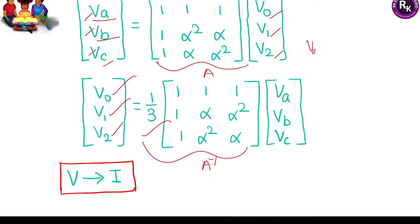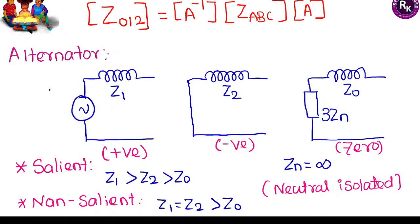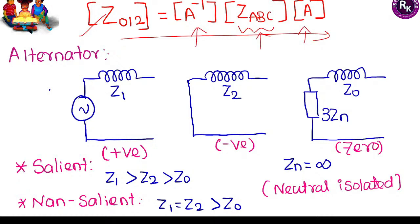For impedance, to obtain zero/positive/negative sequence impedance from phase impedances, multiply A-inverse × [phase impedance matrix] × A in that order — do not interchange. For an alternator facing unsymmetrical fault, separate positive sequence, negative sequence, and zero sequence equivalent circuits are drawn for each phase. In the zero sequence circuit, the neutral impedance appears as 3Zn. If neutral is isolated (Zn = infinity), zero sequence acts as open circuit and zero sequence current becomes zero.